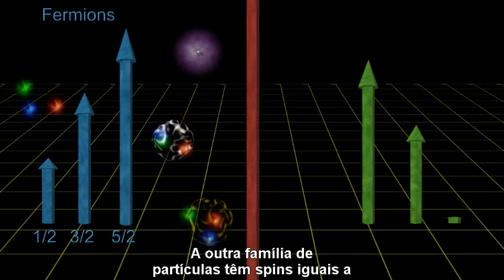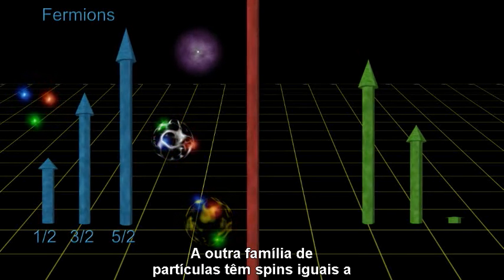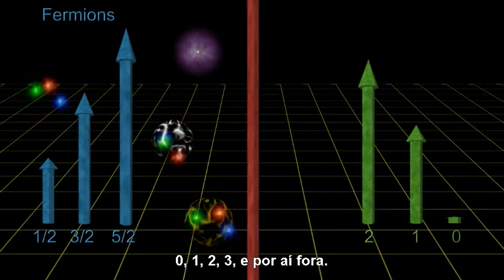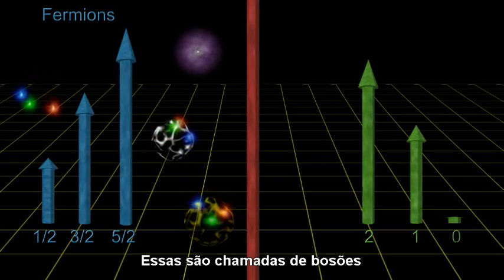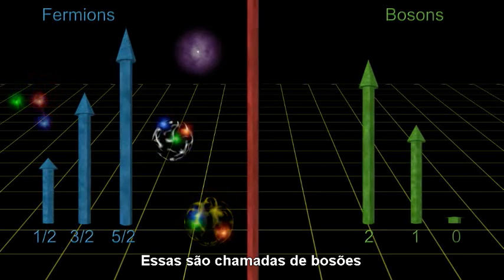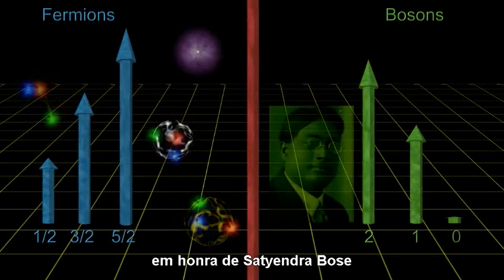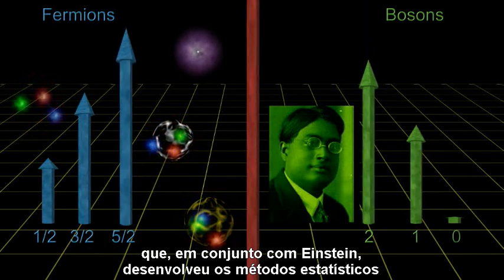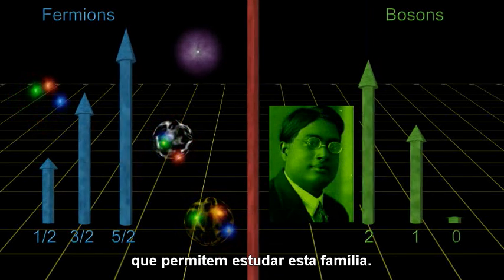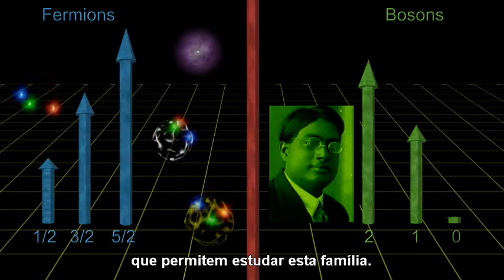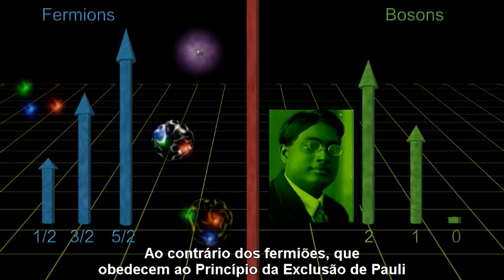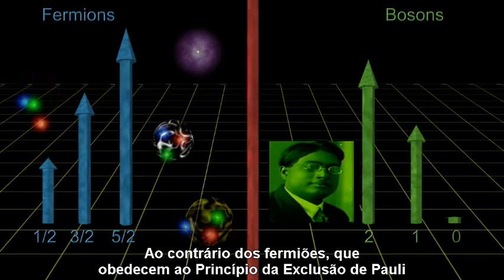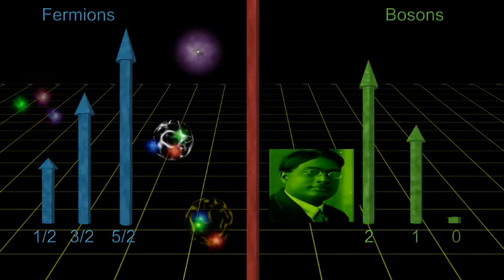The other family of particles have spin equal to zero, one, two, three, and so on. They are called bosons, after Satyendra Bose, who along with Einstein developed the statistics for dealing with this family. Unlike fermions, which must obey the Pauli Exclusion Principle, bosons do not.